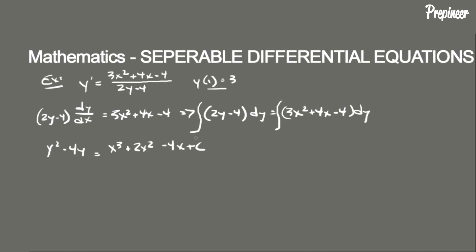Now let's use our initial value to determine the constant of integration. We plug in the values: 3 squared minus 4 times 3 equals 1 cubed plus 2 times 1 squared minus 4 times 1 plus C, and we find that C is equal to negative 2.